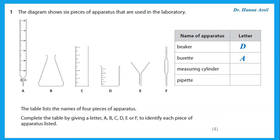If it has only a tap and no graduations, it's called a tap funnel or a dropping funnel. But if it has graduations, then it is a burette, and this is very accurate. I can use it to add any volume that is needed to a solution.